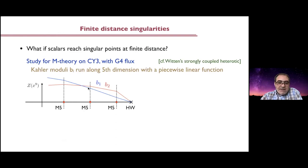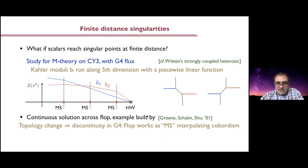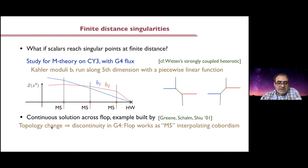There are jumps for the corresponding moduli with discontinuities in their first derivatives — a bunch of piecewise linear functions controlling the evolution of the Calabi-Yau as you move in the fifth dimension. What happens if you have an evolution of your Calabi-Yau such that it suffers a flop? One of the two-cycles goes to zero size and then goes negative — a typical flop transition. This was already studied by Green and Shapere about 20 years ago, and they checked that in this setup of Witten's strongly-coupled heterotic there is continuity: a continuous solution across the flop. They built a complete compact example with two Hořava-Witten boundaries, and the topology-change transition across the flop implies some discontinuity in G4, so the flop works as a kind of M5-brane interpolating cobordism.